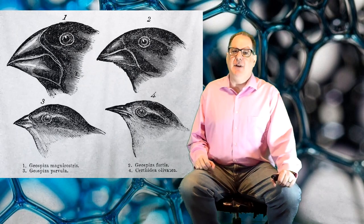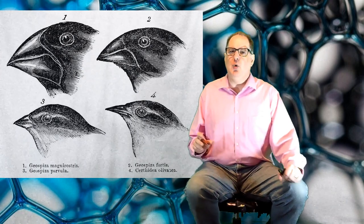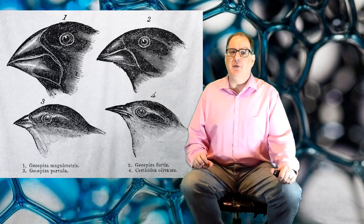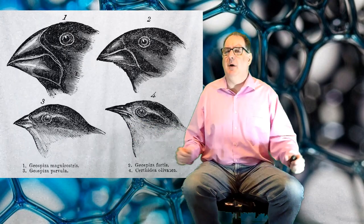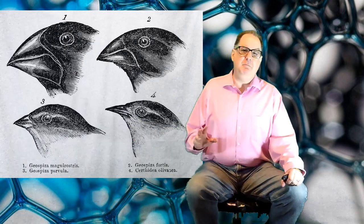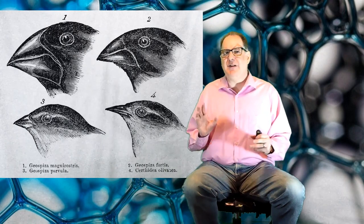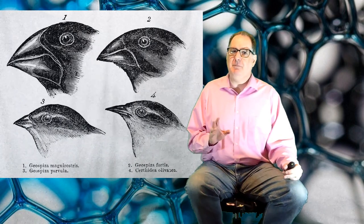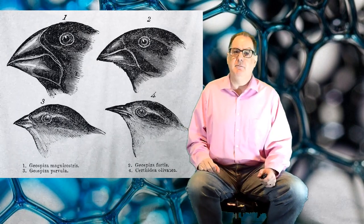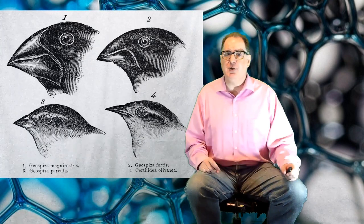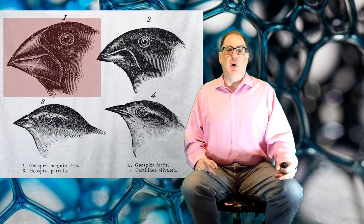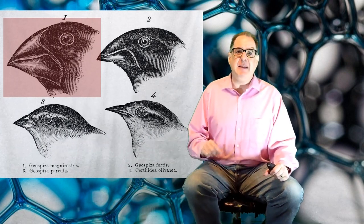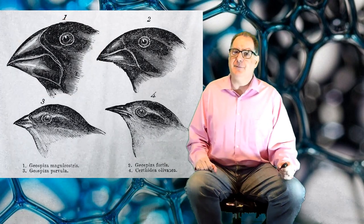Darwin hypothesized that one species of finch was blown out to the Galapagos during a storm. This group of birds spread out among the different islands. But since each island has a different kind of food available, this made different beak shapes helpful on different islands. That's the competition for resources. So on one island, a large beak would be an adaptation, but the same beak shape would be a hindrance on a different island.